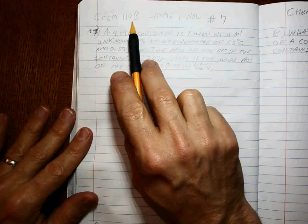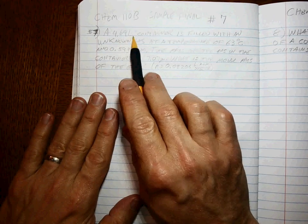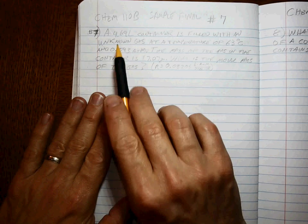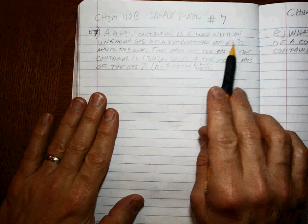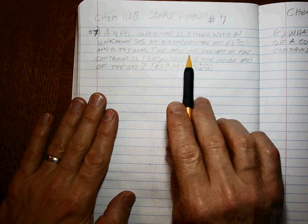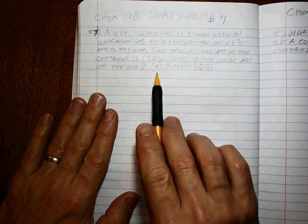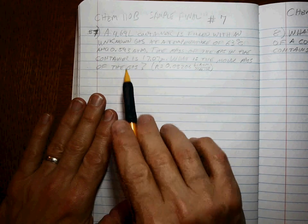And we roll on. Chem 110b sample final number seven. A 4.69 liter container is filled with an unknown gas at 63 degrees Celsius and 0.593 atmospheres. The mass of this gas in the container is 17.07 grams. What is the molar mass of the gas?